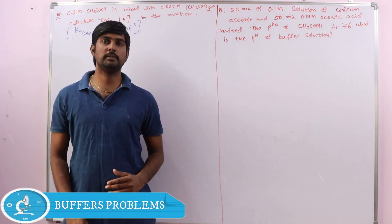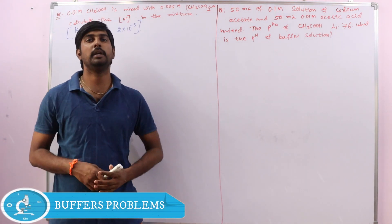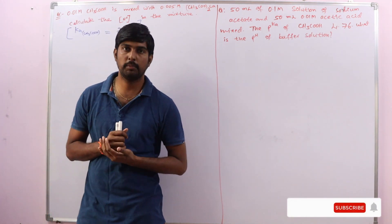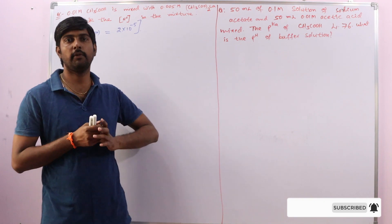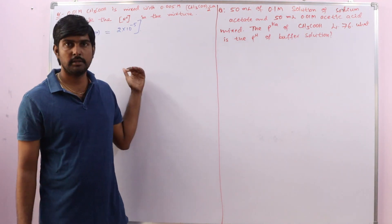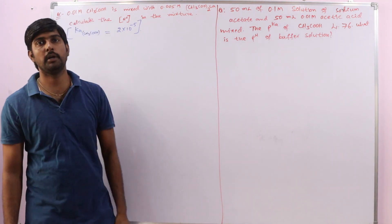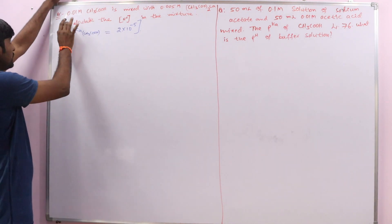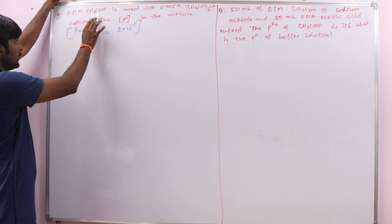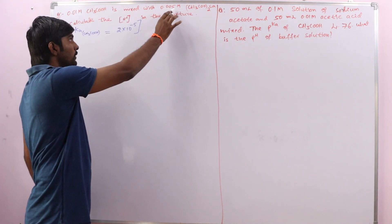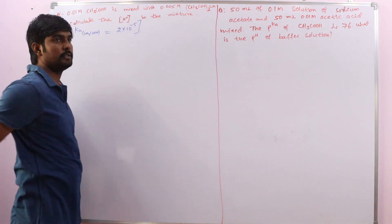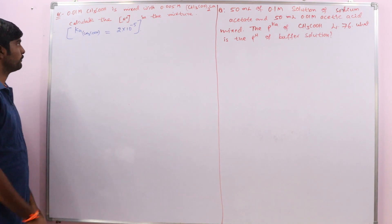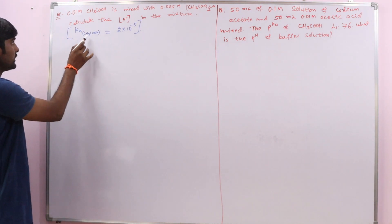In the previous classes we discussed how to calculate pH of acidic buffer solution and basic buffer solution using the Henderson equation. In this lecture we are going to discuss some important problems on the buffer concept. The first problem: 0.01 molar acetic acid is mixed with 0.005 molar calcium acetate. Calculate the H⁺ ion concentration present in the mixture, given the acid dissociation constant Ka.